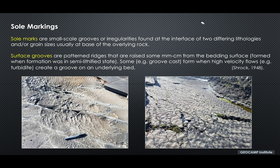Groove casts are patterned ridges that you find on some kind of bedding surface or bedded strata, such that those little ridges have some millimeter to centimeter thick amplitude — sometimes very thin, but in other cases much larger-scale grooves on the bedding surface. They typically form when the formation was originally still consolidating, still in a semi-consolidated or semi-lithified stage. According to some authors, some of this evidence of groove forms when high-velocity flows moving in one direction create a groove on the underlying bed.